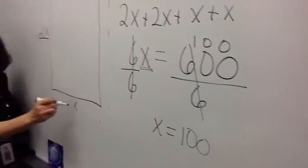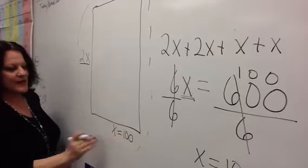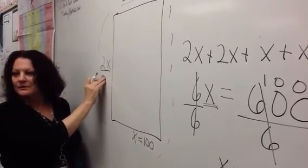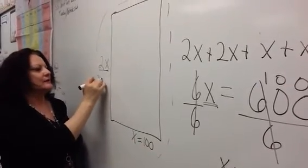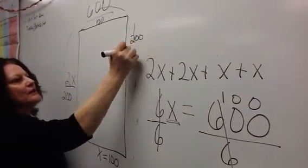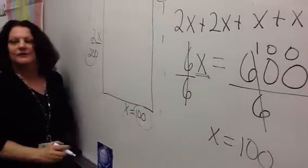So, now I'm going to come back to my shape, and I'm going to insert 100 for x. 2 times x is how much? 200, right. This is 100, and this is 200. If we add up all the sides, are we going to get 600? Yes.